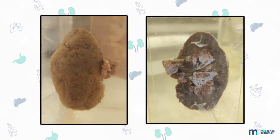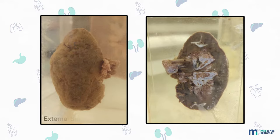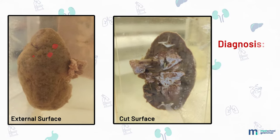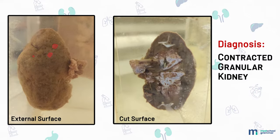Specimen of kidney, 10 by 4 by 1 centimeter. External surface shows coarsely granular appearance, presence of few tiny cysts and scars. Cut surface: cortex is narrowed, medulla shows congestion, and there is increase in perinephric fat. Diagnosis: contracted granular kidney.